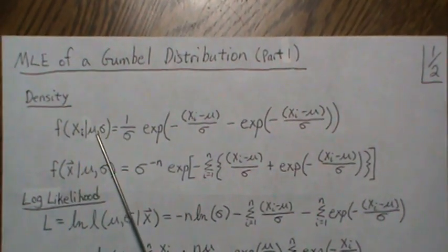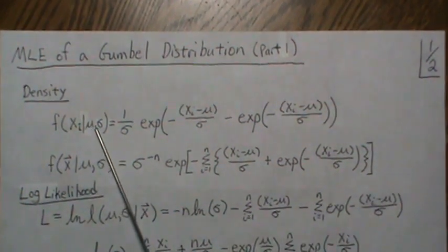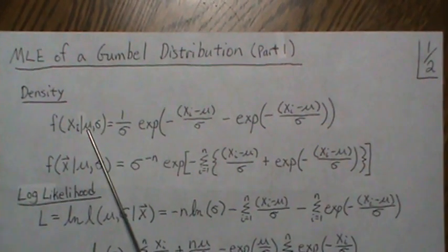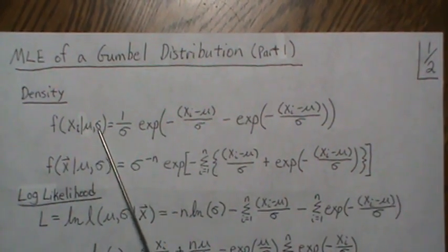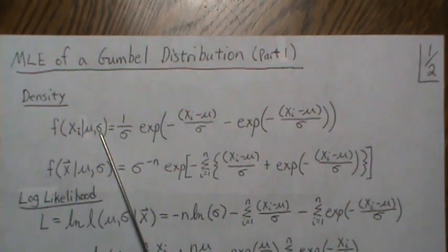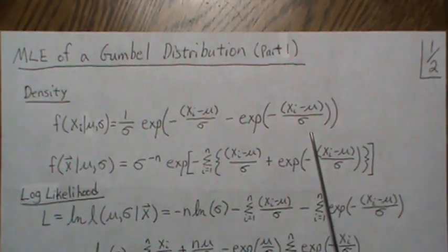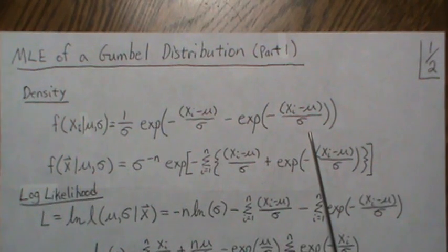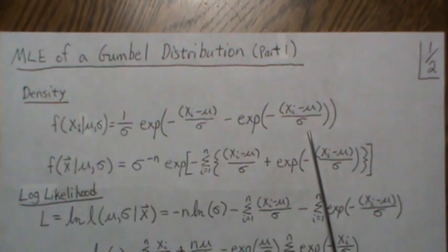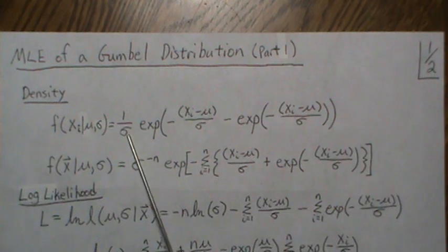The Gumbel distribution is a two-parameter distribution with density f(x; μ, σ). Note that μ and σ are not the mean and variance of the distribution — μ is the shift parameter and σ is the scale parameter. This is the formula for the density of a Gumbel distribution.